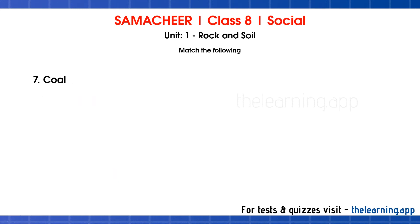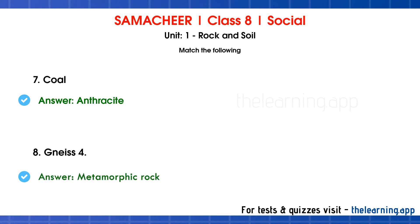Seventh question: Coal. Correct answer is anthracite. Anthracite is a variety of coal. Eighth question: Gneiss. Correct answer is metamorphic rock. Granite is an igneous rock, but under high temperature or pressure it is converted. Gneiss is formed from granite and is a metamorphic rock.